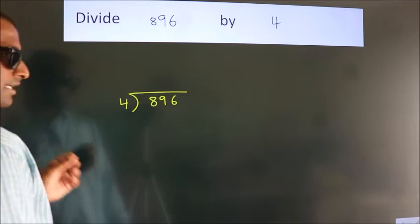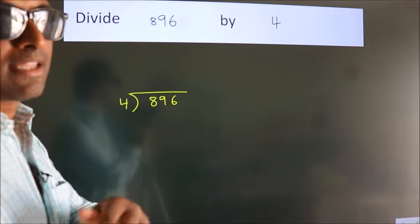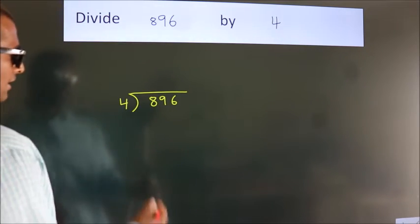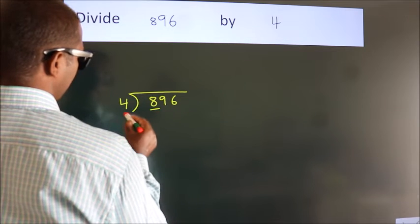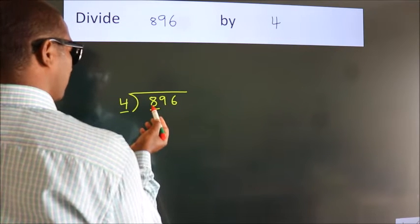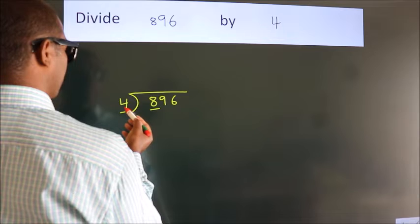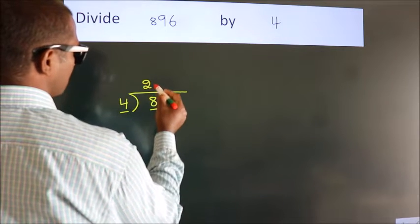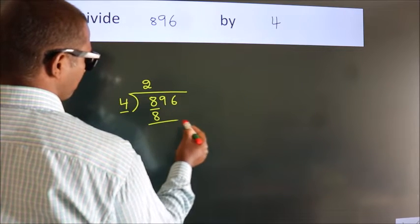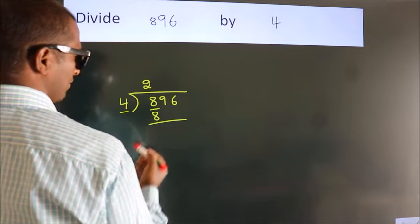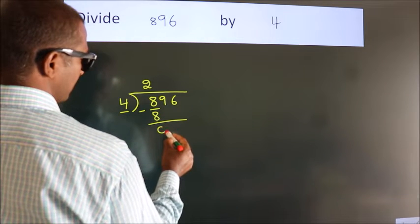This is step 1. Next, here we have 8, here 4. When do we get 8? In the 4 table, 4 twos is 8. Now we subtract and get 0.